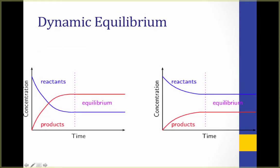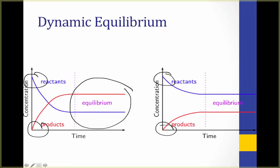Looking at a graph of concentration of reactants and products, we begin with a high concentration of reactant and a low concentration of product. This is reasonable since at the start of the reaction, there's no product yet formed. But as the reaction proceeds, the concentration of reactant will decrease and product will increase, until they become constant when we reach equilibrium — the point at which the rate of formation of products is equal to the rate of breakdown of products back into reactants.